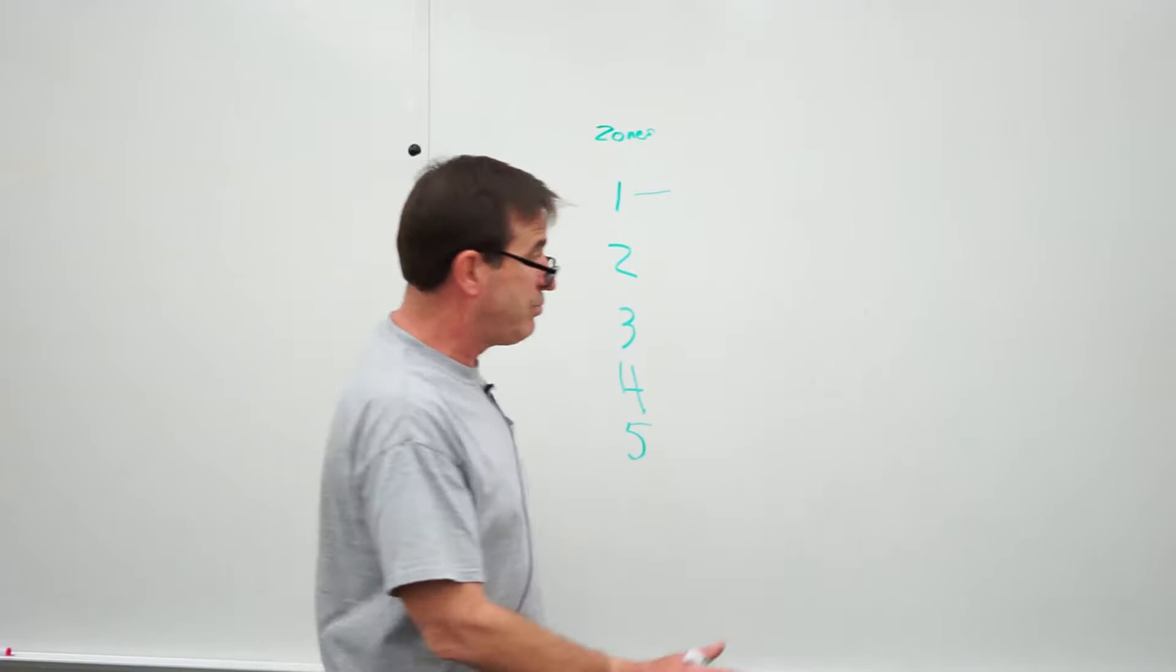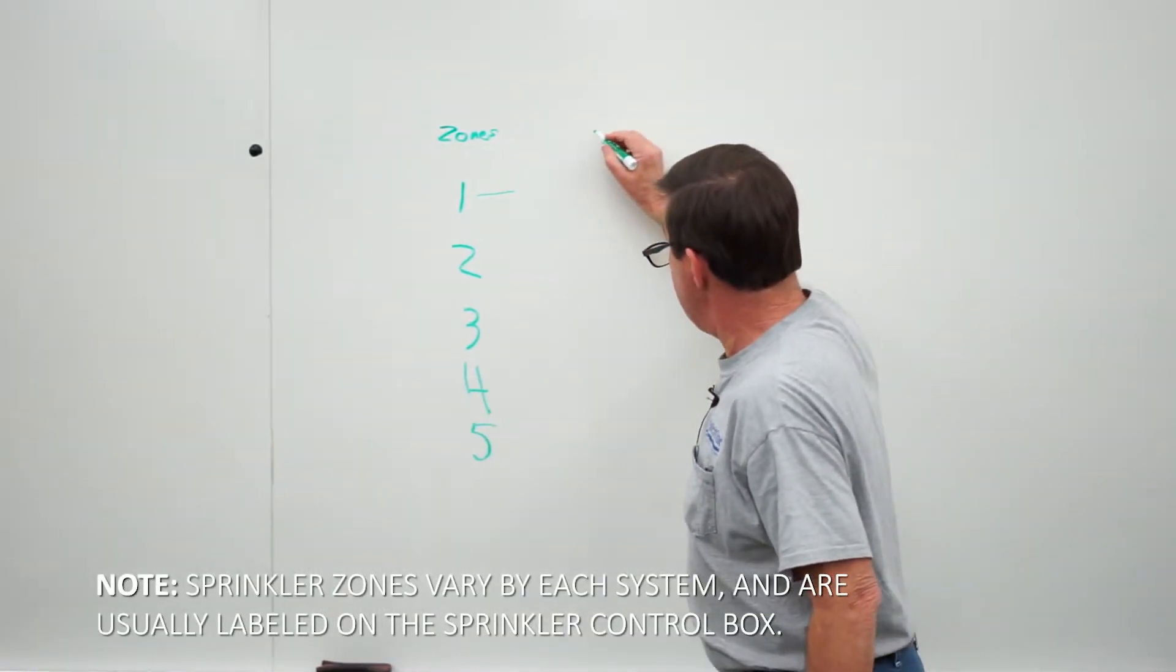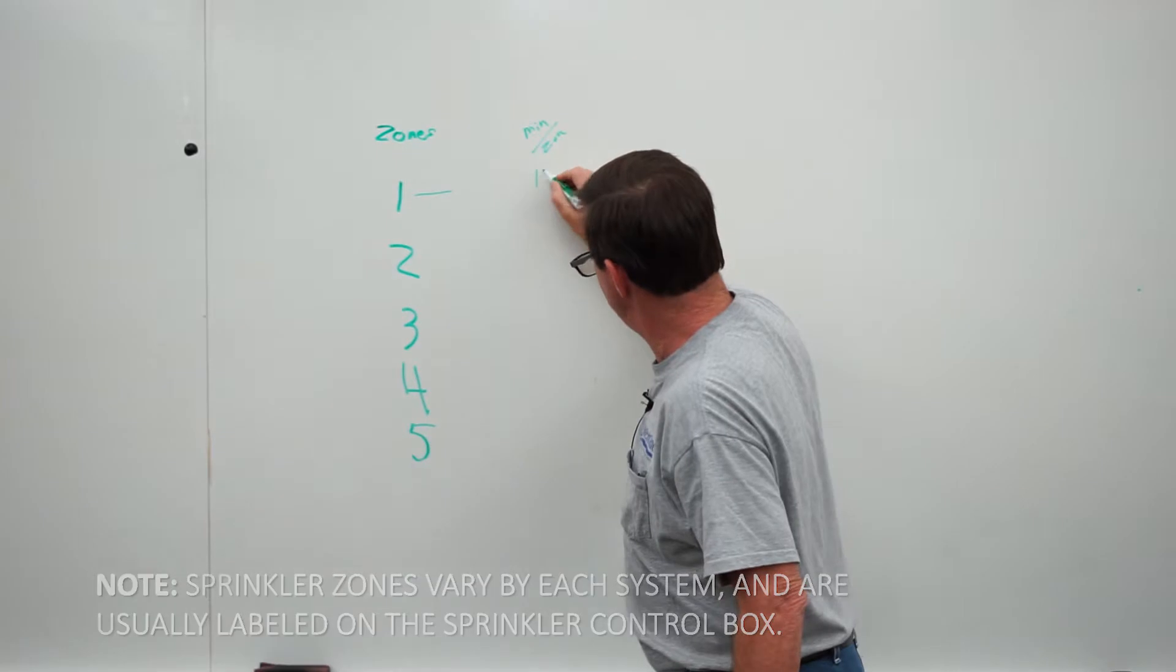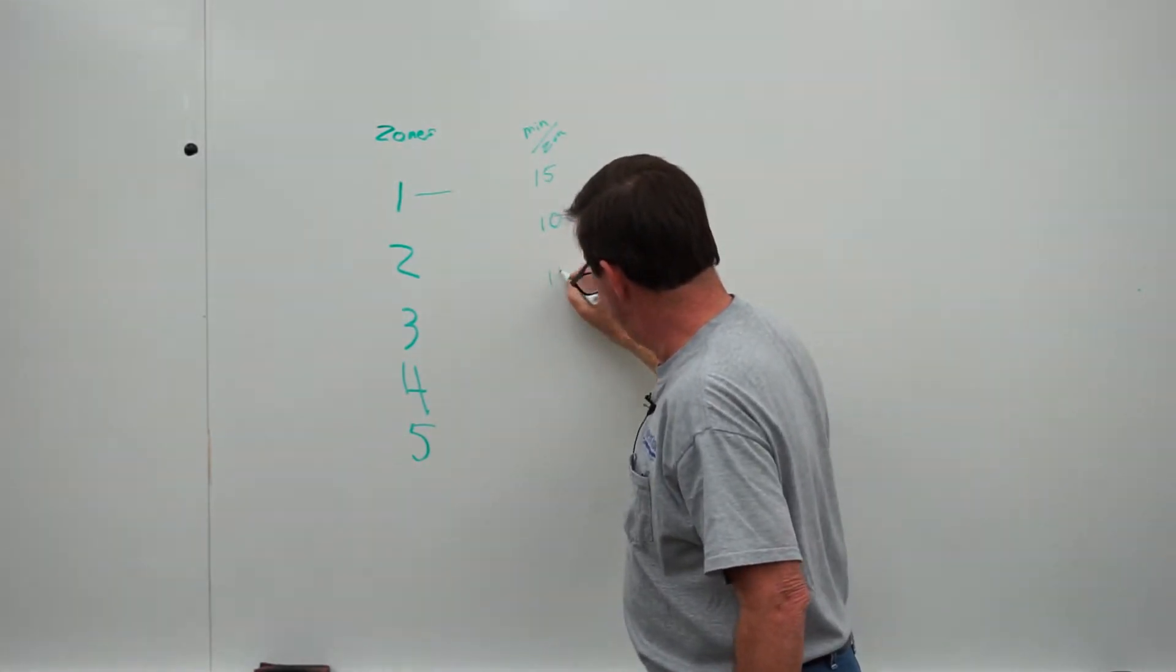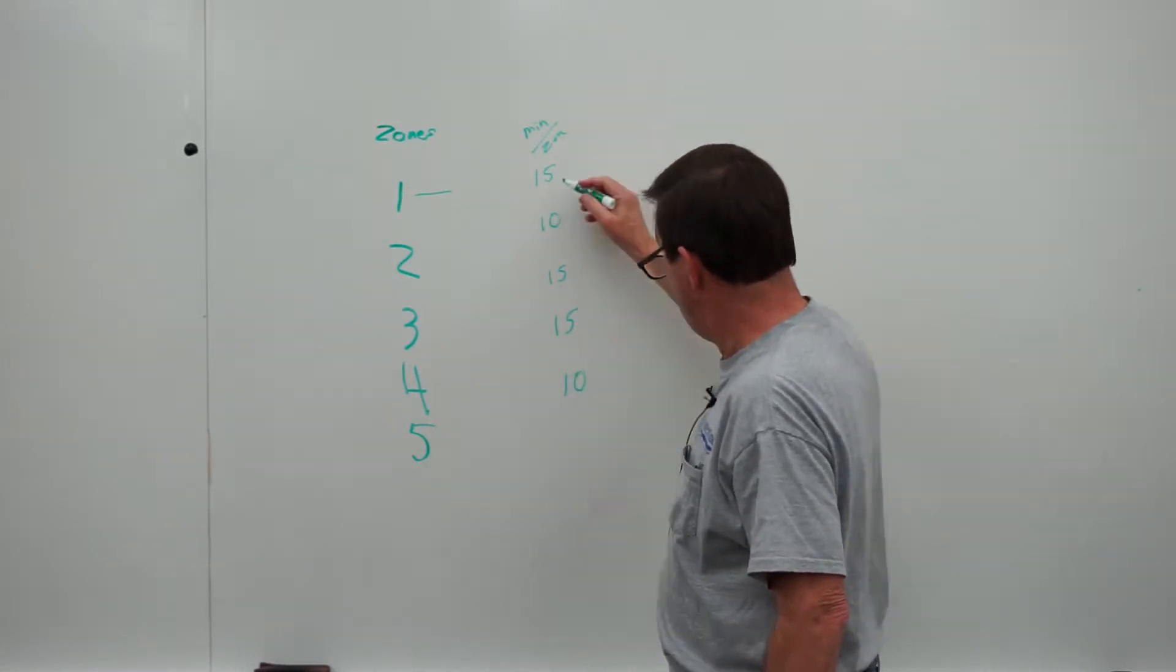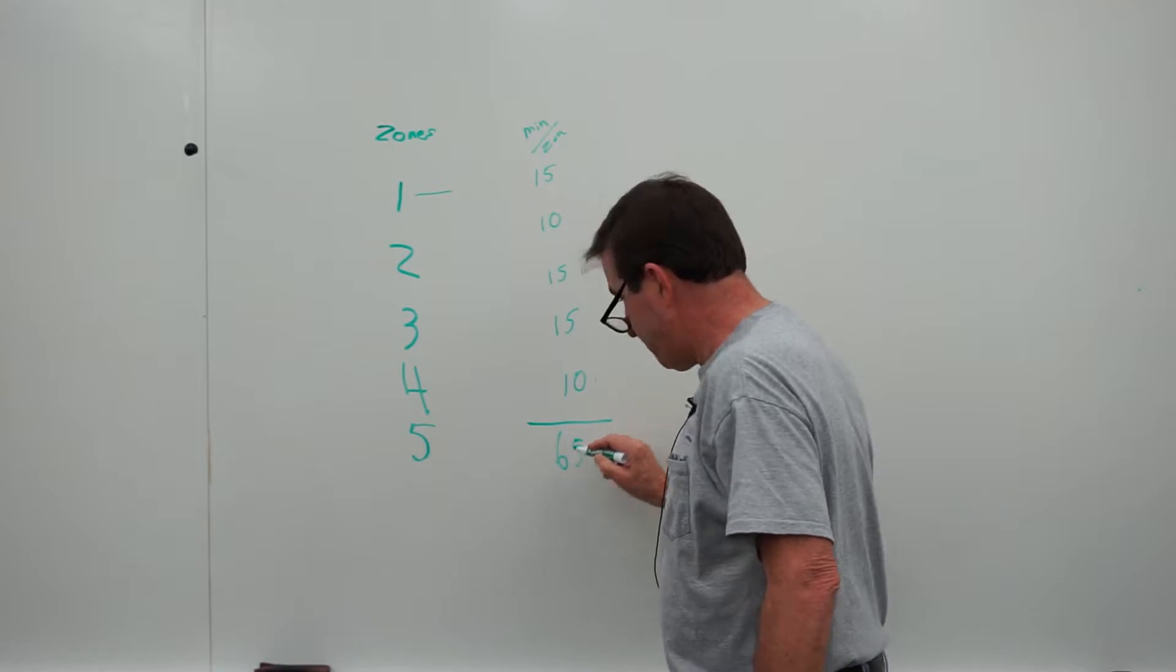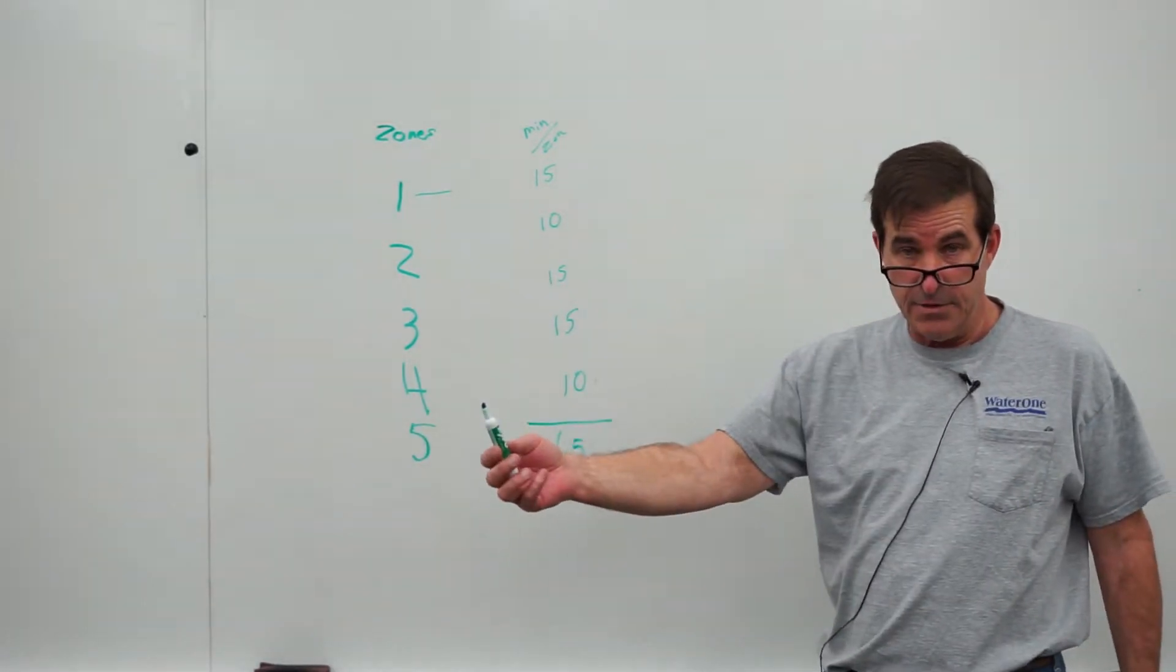Here's a standard homeowner sprinkler system. They have five zones to their sprinkler system. These are minutes in the zone and they run this one 15 minutes, this one 10 minutes, this one 15 minutes, this one 15 minutes, and this one 10 minutes. All in all it runs 30, 45, 55, 65 minutes. So it takes an hour and five minutes for this sprinkler to go around the home entirely.